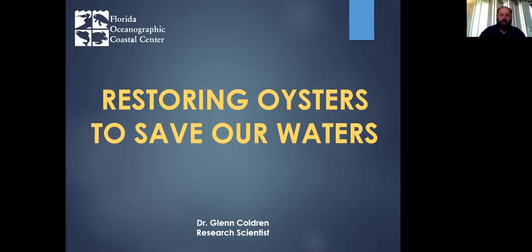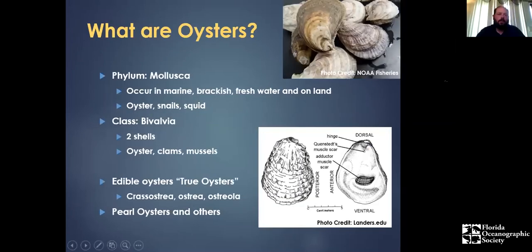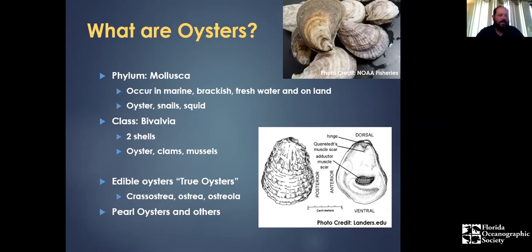Let's start off talking about what oysters are. Oysters are in the phylum Mollusca — the same phylum that includes snails, squids, clams, and mussels. It's a very diverse group. Although people typically think of them as oceanic marine species, they occur commonly throughout brackish areas like estuaries, in freshwater bodies like lakes and streams, and even on land. The snails you see in your yard are actually in the phylum Mollusca.